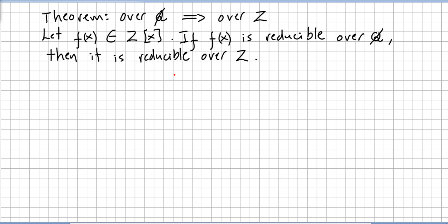We are still on the factorization of polynomials, and now we are going to prove a very nice theorem: reducible over the rationals implies reducible over the integers. That is, let f(x) be a polynomial in the ring of integers. If f(x) is reducible over the rationals, then it is reducible over the integers.